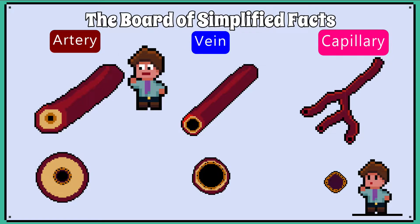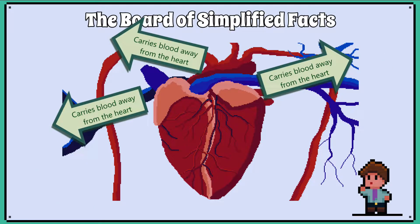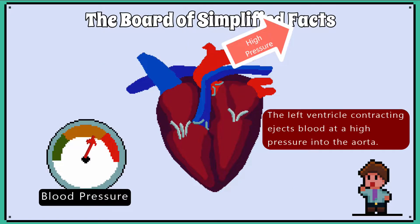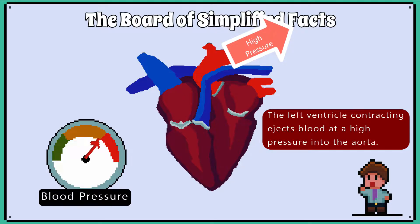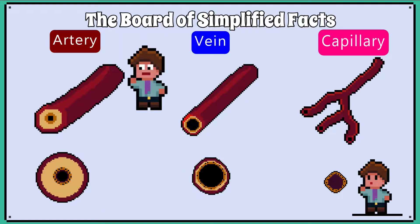We need to know the structural differences and reasons behind them between the arteries, veins, and capillaries. Arteries carry blood away from the heart, and except for the pulmonary artery, it is always oxygenated blood. The blood just leaving the heart is always at a higher pressure as it is closer to the pumping action of the heart. This means the structure of the arteries must cope with the great changes in blood pressure.